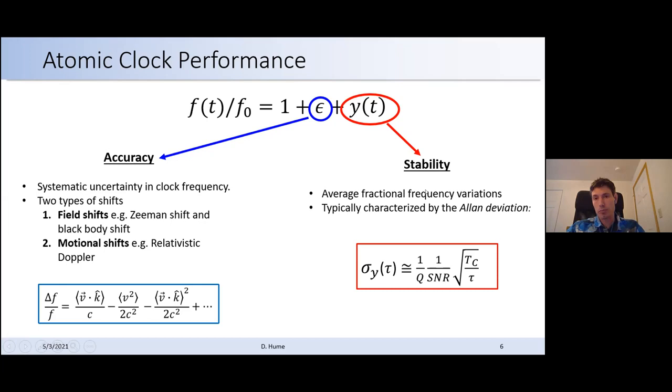And then the stability. In general, we think about the projection noise limit, which has to do with the number of atoms that you have in the clock. And that just leads to a fundamental limit in the noise that you get when you make measurements on the clock state. It enters into the stability here as the signal to noise ratio. So it's better with higher numbers of atoms. And there are quantum tricks that we can play, which I won't be talking much about in this talk, but it's a really interesting avenue of research that has been pursued by a lot of groups. In general, for the measurements that I'm going to be describing in this talk, at least on the ion side, we have a single ion. So the signal to noise ratio there is just one.